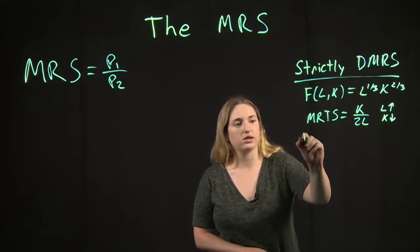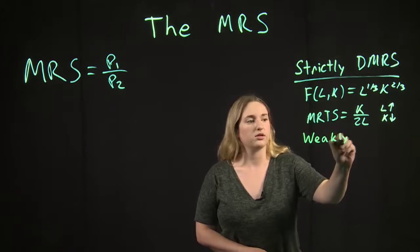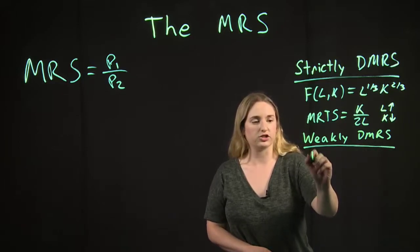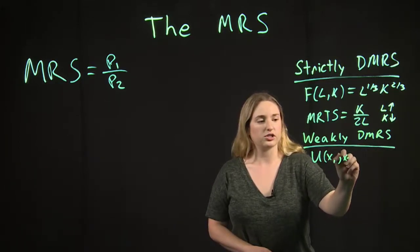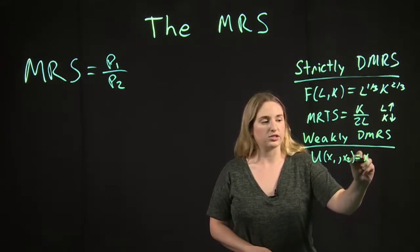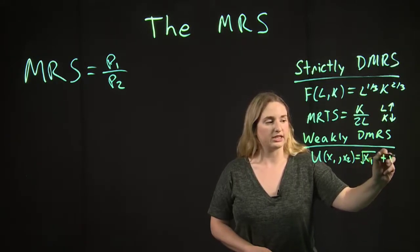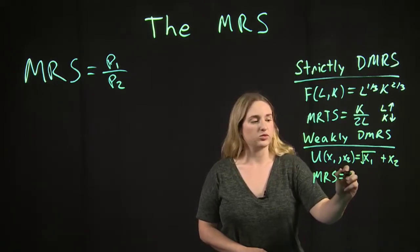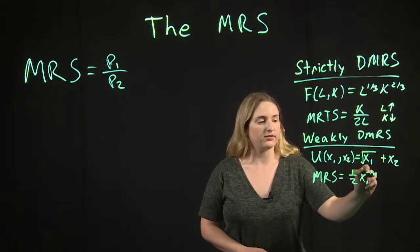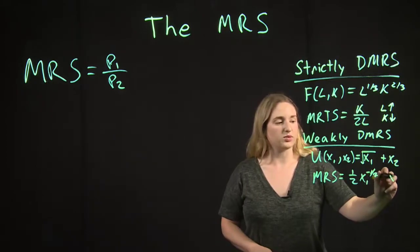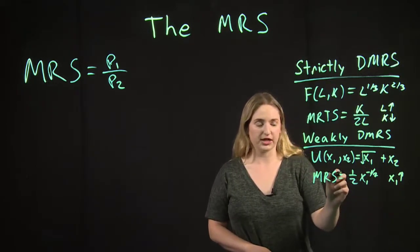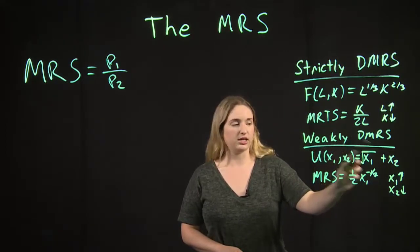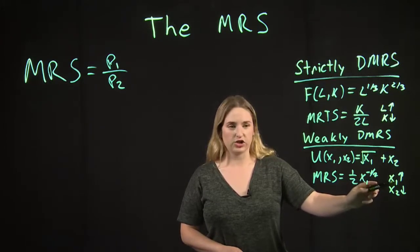The other case is when we have a weakly diminishing marginal rate of substitution. So for example, what if we had the utility function u(x1, x2) equals x1 square root plus x2. In this case the MRS is equal to 1 half x1 to the negative 1 half. So as x1 goes up the MRS shrinks, but as x2 goes down the MRS doesn't change. So that's why it's weakly diminishing. It does the right thing with x1 but it doesn't change at all with x2.